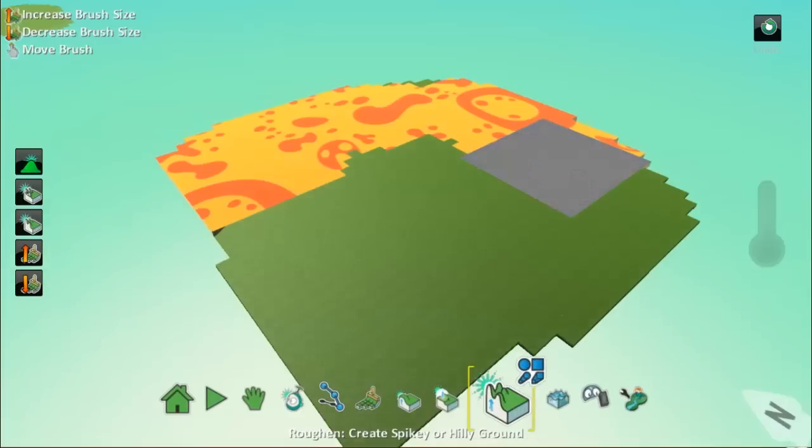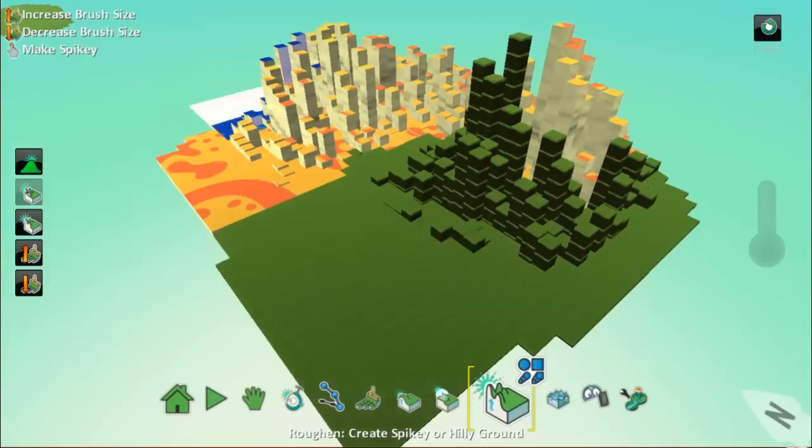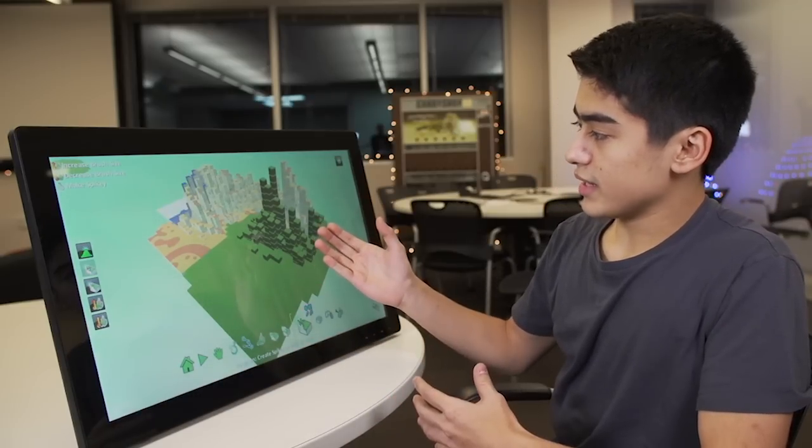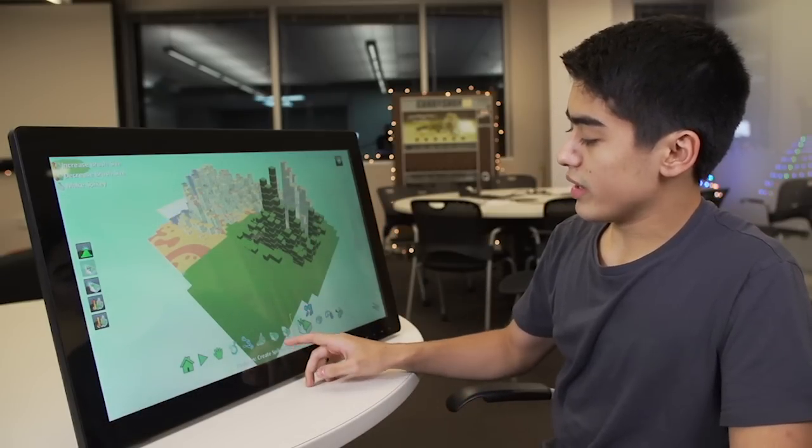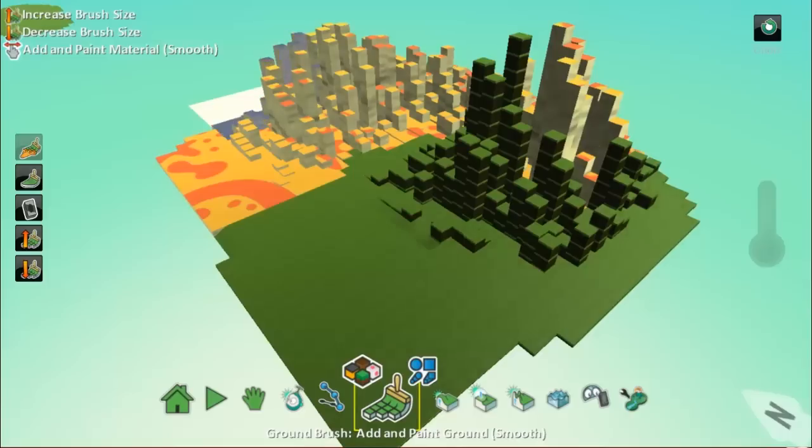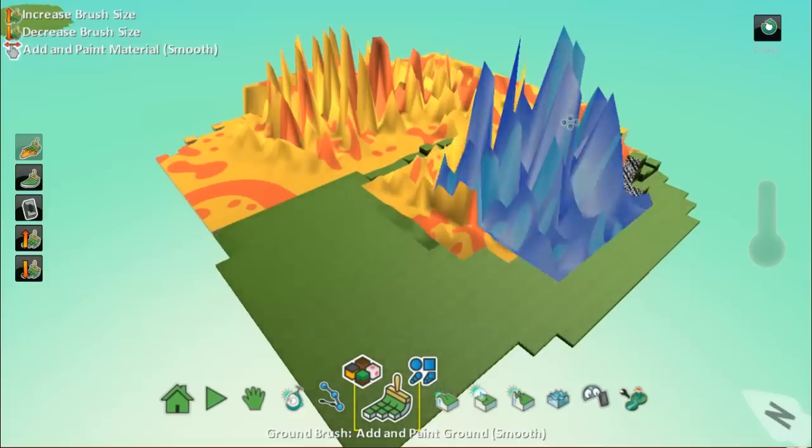So down at the bottom here we're going to select this up and down mountain kind of brush. And using this you can create mountains around your world. Now my mountains are also very pixelated as you can see here. One way that we can fix this is going back to our brush tool, selecting the smoother brush, and repainting over them. And this gives us this really cool spiky mountain look.